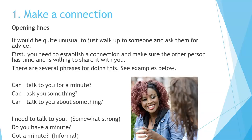Step 1: Make a connection — opening lines. It would be quite unusual to just walk up to someone and ask them for advice. First, you need to establish a connection and make sure the other person has time and is willing to share it with you. There are several phrases for doing this: "Can I talk to you for a minute?" "Can I ask you something?" "Can I talk to you about something?" "I need to talk to you" — this is somewhat strong. "Do you have a minute?" "Got a minute?" — this is a little bit informal.